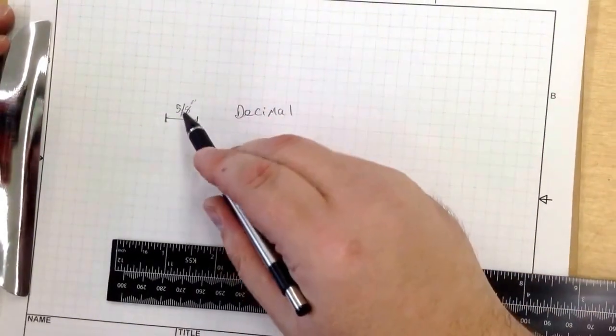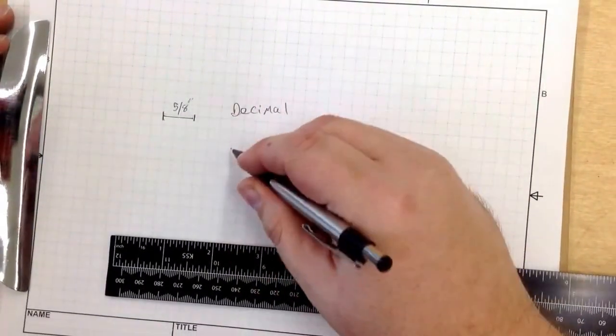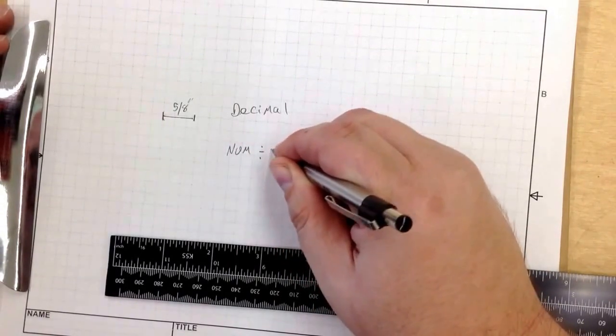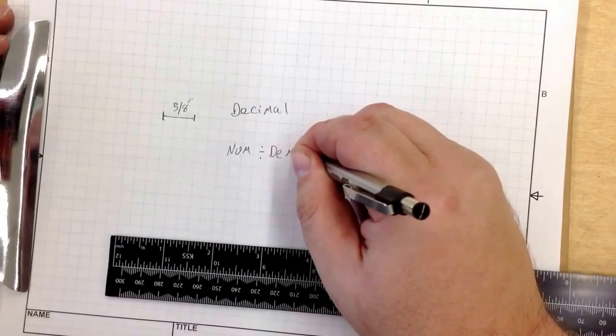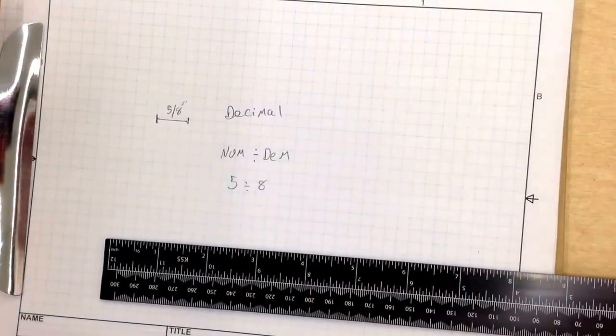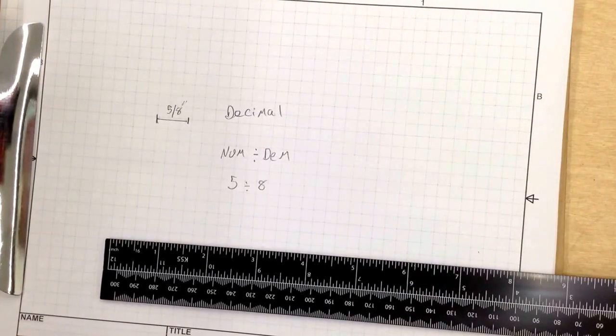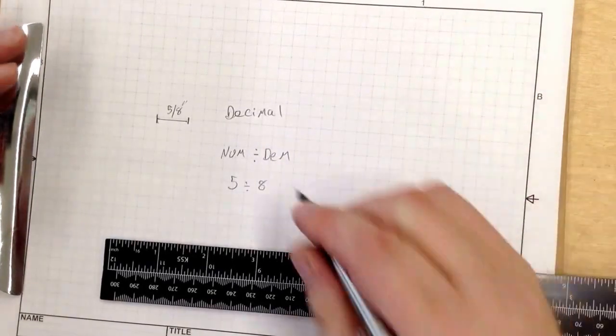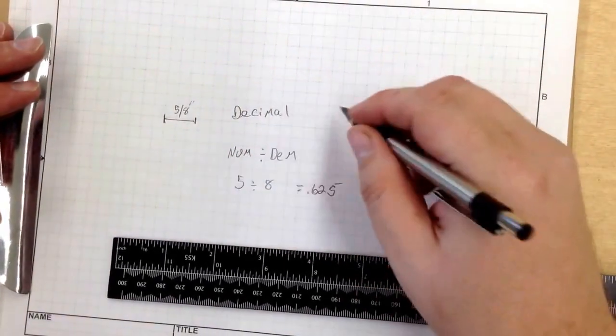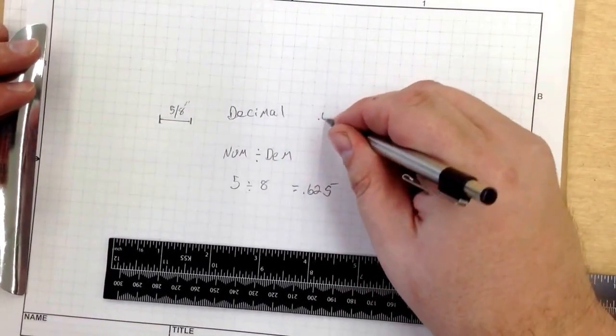The easiest way to do it is the numerator divided by the denominator. So that would be 5 divided by 8, which equals .625. So the decimal equivalent of 5 eighths is .625.